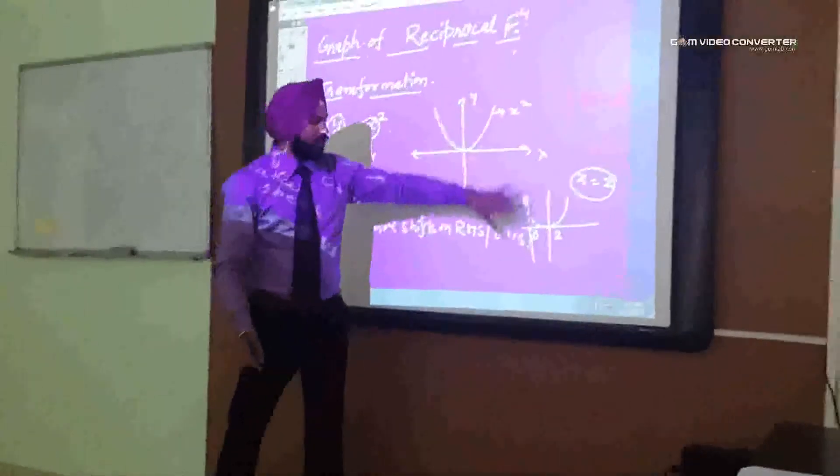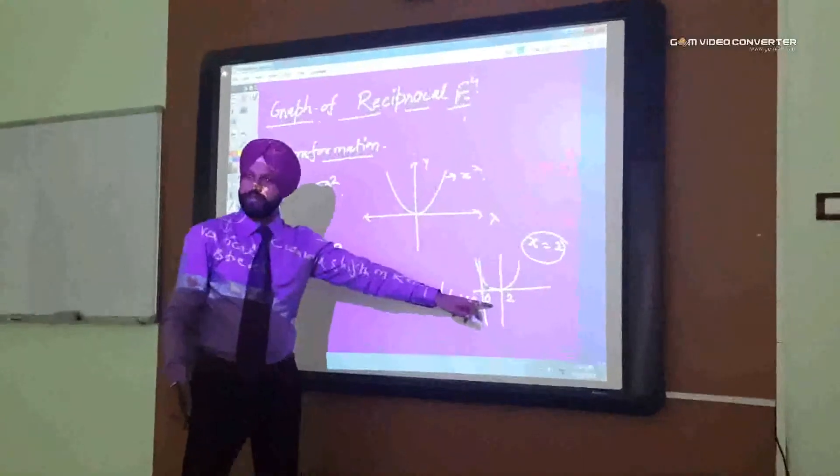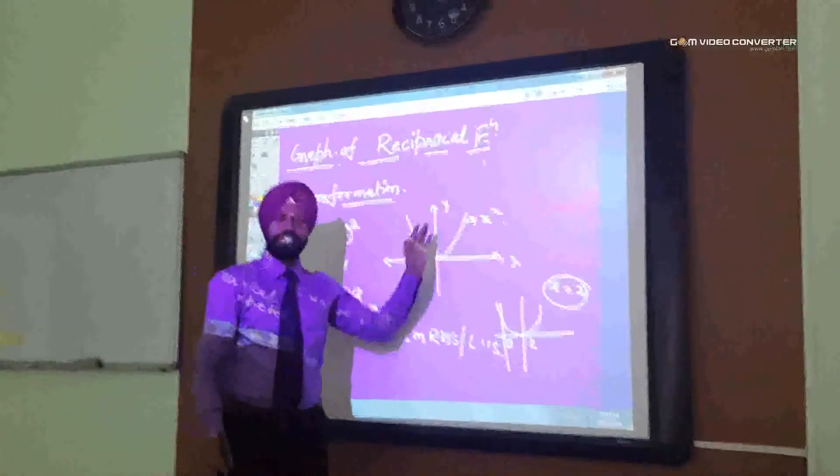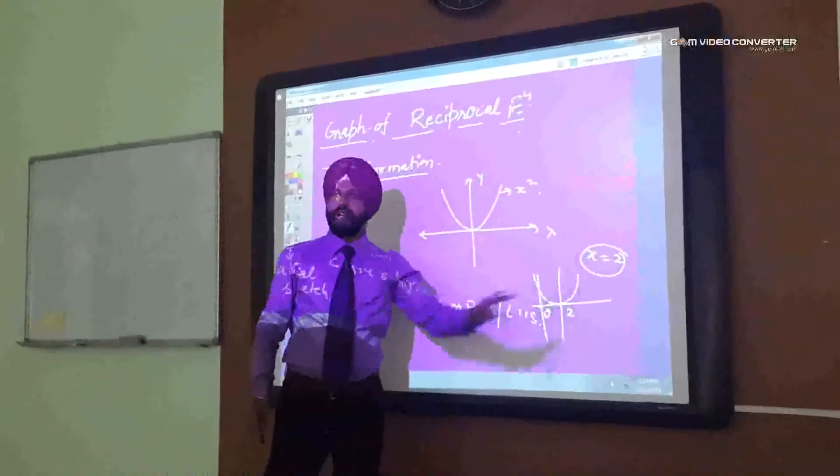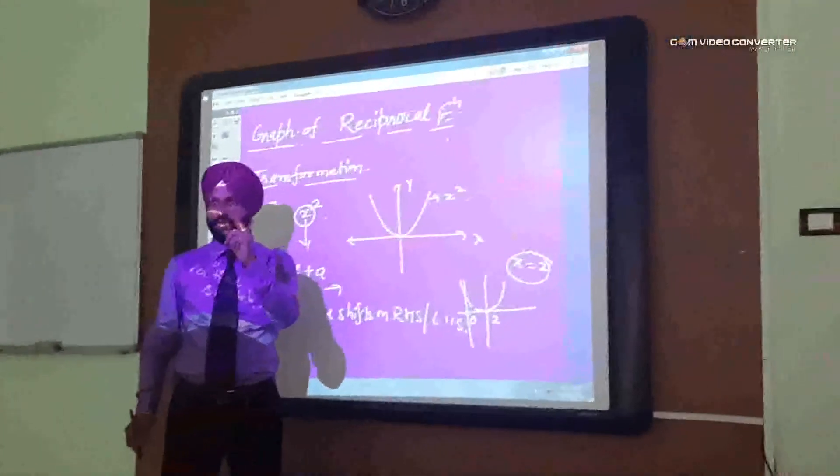So, now, what is the difference in this and this? Only the curve shifted on right side by 2 units.